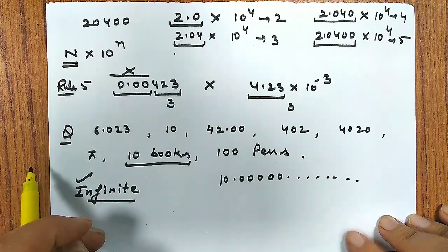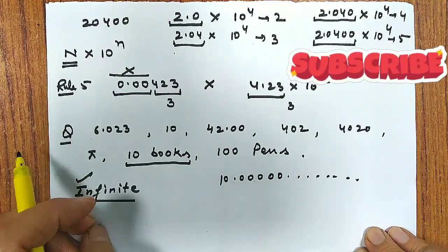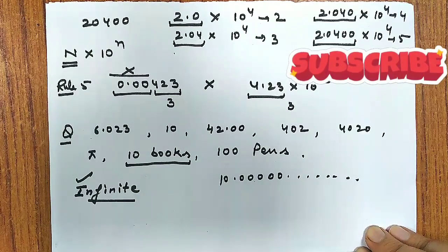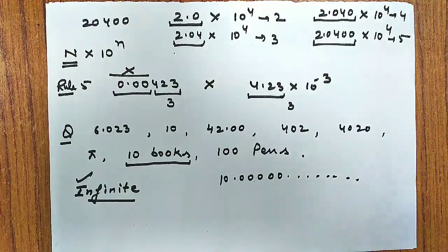While counting any object, the number of significant figures is always infinite. Why? Because when we count any object, if you're counting books it would be 10, if you add one more book it becomes 11. That means it can never be 10.1 or 10.2, it is always 10.000000 up to infinite level. So while counting any object, the significant figure would be infinite. I want these answers in the comment section. If you like this video and understood it, please click the like button and subscribe this channel. Thank you.